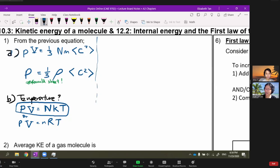NkT is equal to 1/3 Nm<c²>. We're going to cancel the N and bring the 3 over to the other side.